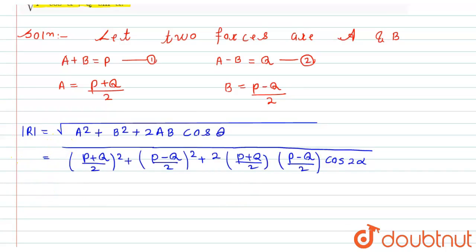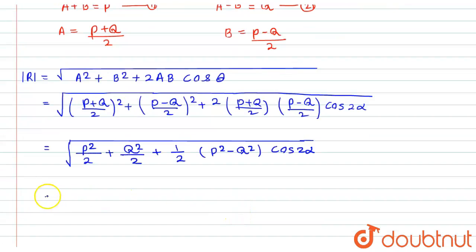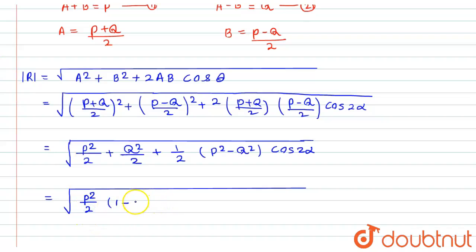After simplifying, what we get is: under root of p squared by two plus q squared by two plus one half of (p squared minus q squared) times cos of 2 alpha. This further simplifies to: under root of p squared by two times (one plus cos 2 alpha) plus q squared by two times (one minus cos 2 alpha).